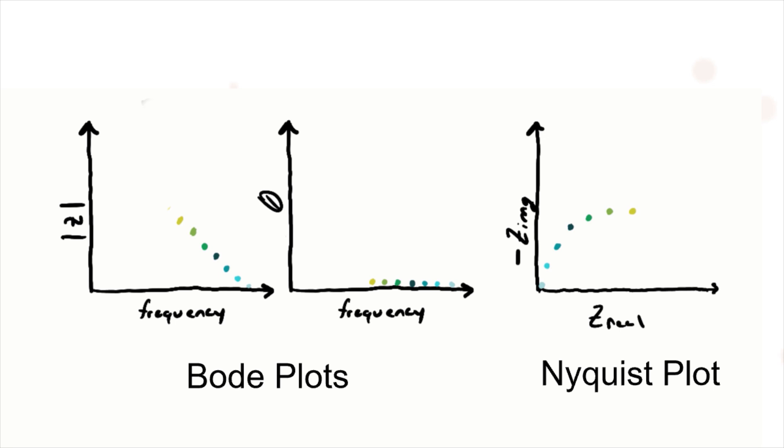A Bode plot can also represent the impedance with frequency on the x-axis and the amplitude or phase shift of the impedance on the y-axis. This animation shows how the data is related between the different graphs, where points of the same color are taken at the same frequency.